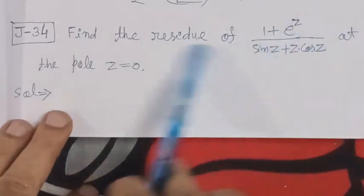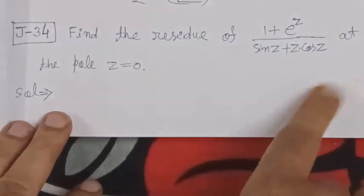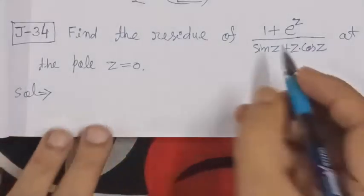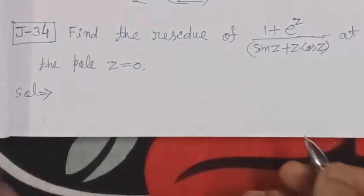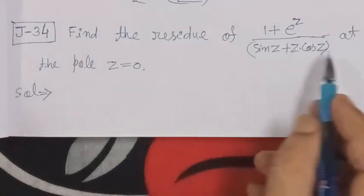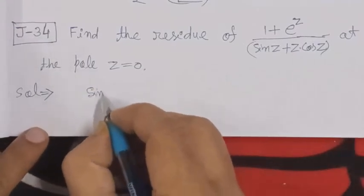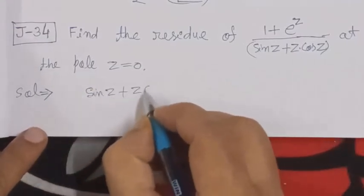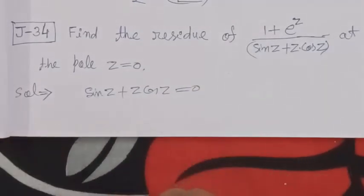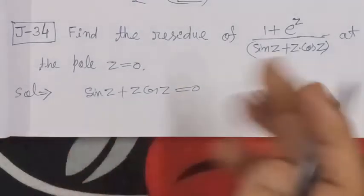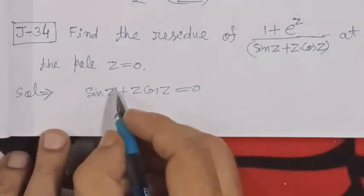We need to find the residue of the function at the pole. First, we should find the pole and determine its order. The denominator, when set equal to zero, gives us the poles. We're only concerned with z = 0. Setting sin z + z cos z = 0 will give us the pole values.